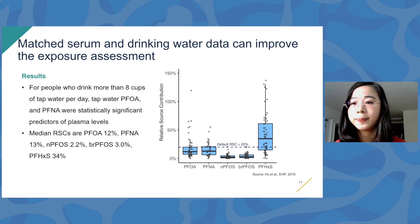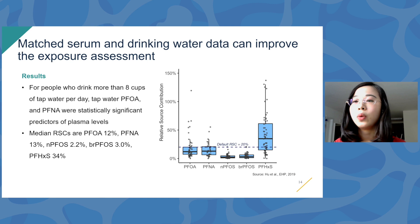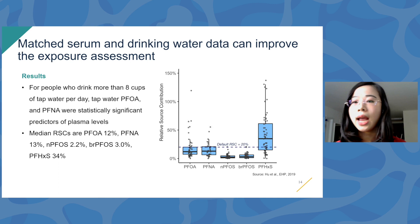Even though ours was a pilot study of 250 people, we discovered some really exciting insights. Using both a toxicokinetic modeling approach and a statistical regression approach, we found that PFOA and PFNA levels in drinking water were statistically significant predictors for their levels in blood among people who drink more than eight cups of tap water every day. We also quantified the relative source contribution — how much of total PFAS exposure comes from water — and found that this proportion varies across different compounds and different individuals, with important implications for crafting health-protective drinking water standards.